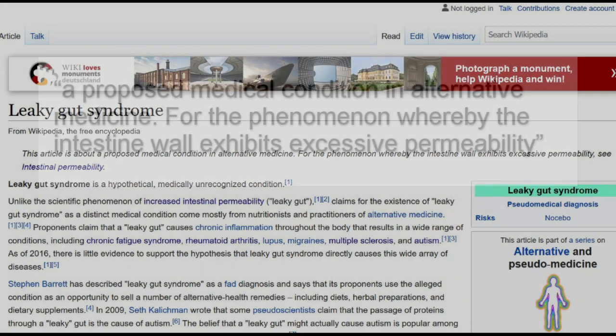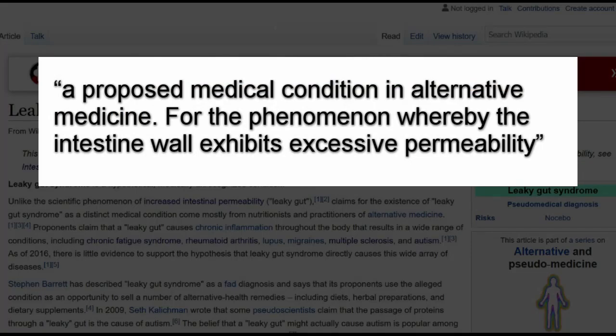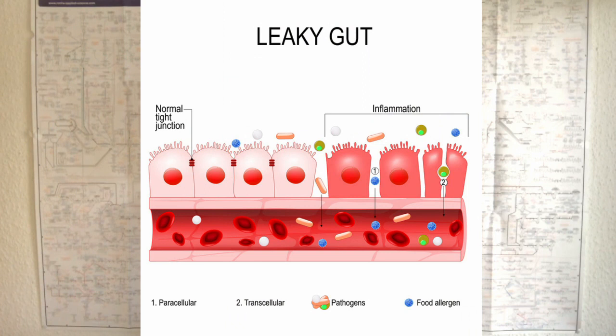According to Wikipedia, leaky gut is a proposed medical condition in alternative medicine for the phenomenon whereby the intestinal wall exhibits excessive permeability. In other words, it describes a condition in which your gut cell wall becomes more leaky and suddenly things that aren't supposed to be there can enter your body.